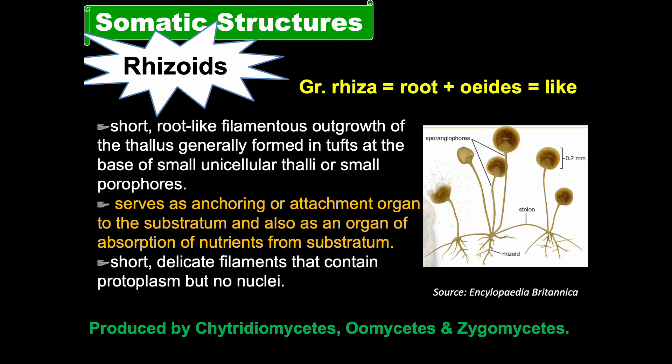Rhizoids are short, delicate, filamentous structures that contain protoplasm, but importantly they do not contain nutrients. Rhizoids are most commonly found in lower fungi belonging to the classes Chytridiomycetes and Zygomycetes. Some species produce many branches of rhizomycelia — an extensive rhizoidal system that usually does not contain nuclei, but through which nuclei migrate. A common example is Cladochytrium species, on whose rhizomycelia numerous sporangia develop.